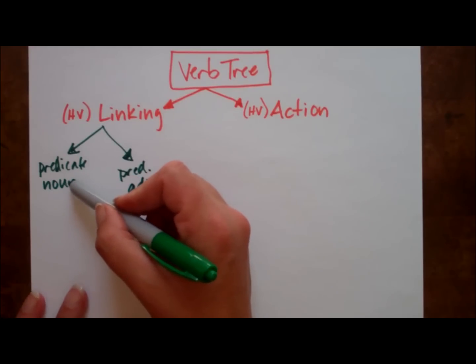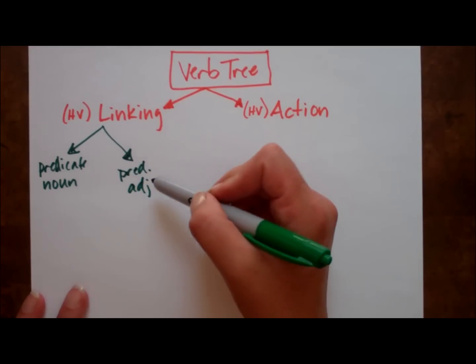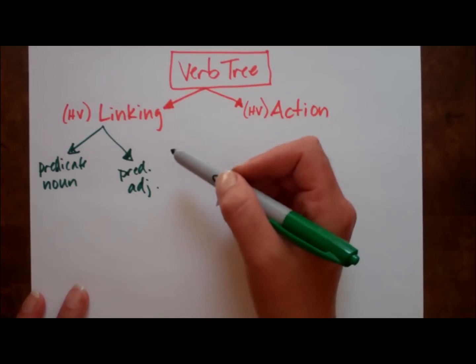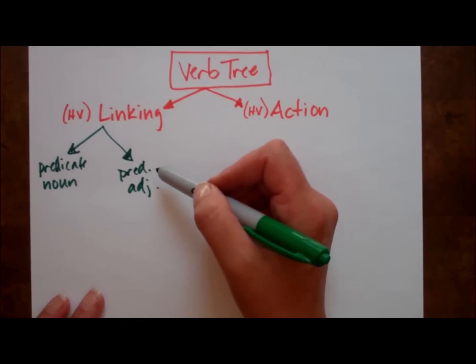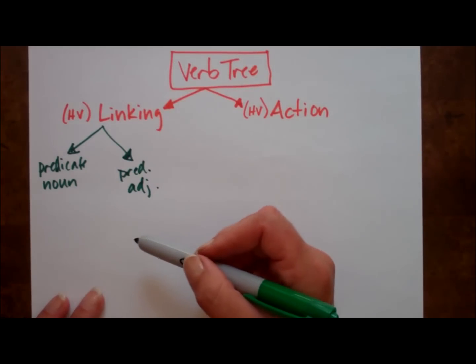Remember that the predicate noun renames the subject, and the predicate adjective describes the subject. That's the extent of the linking branch.